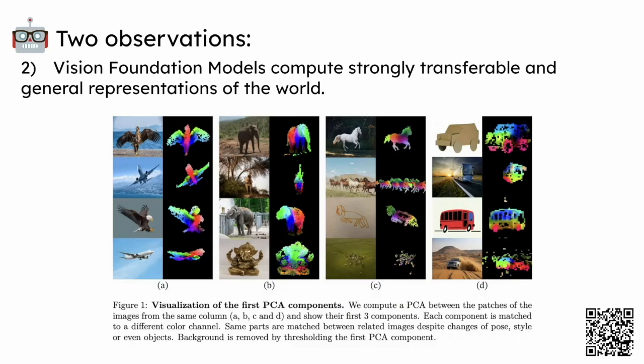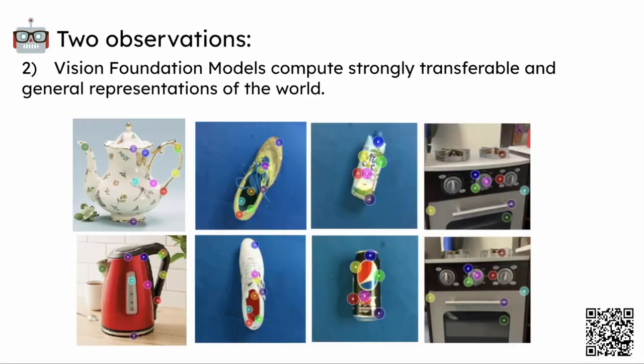The second observation is that vision foundation models compute strongly transferable and general representations of the world. In this image from the DINOv2 paper, we show PCA representations of the output of DINO on very different images. By using these general representations, we can find keypoints of similar semantic parts of different objects, which transfer very well between different objects of the same category.